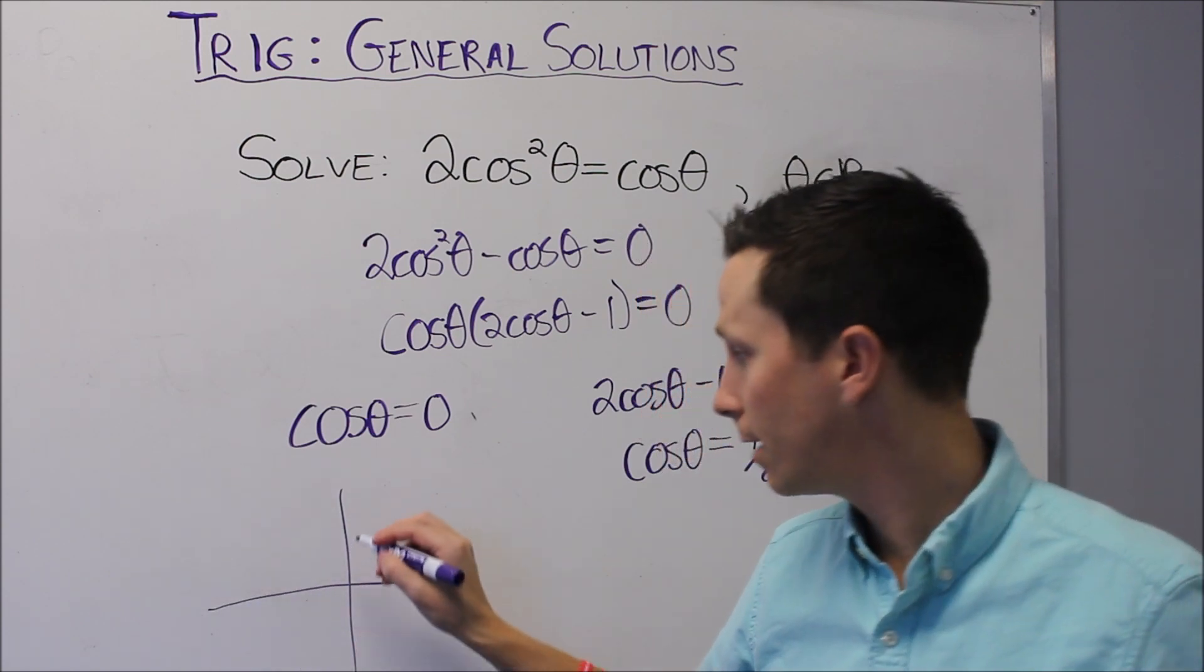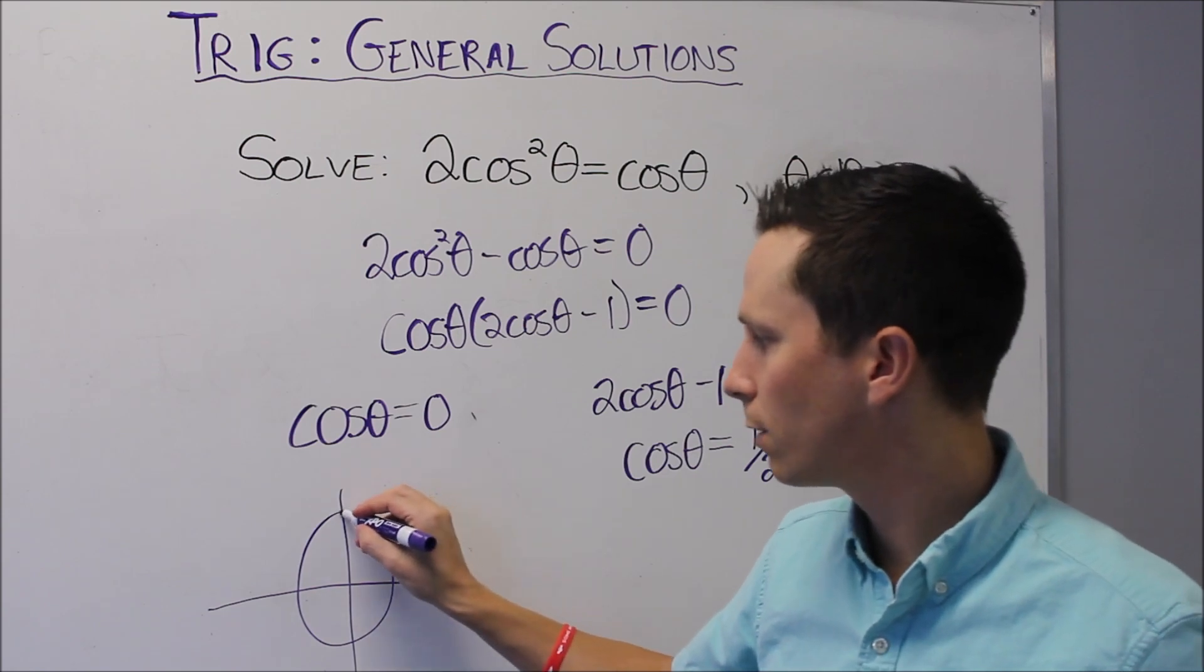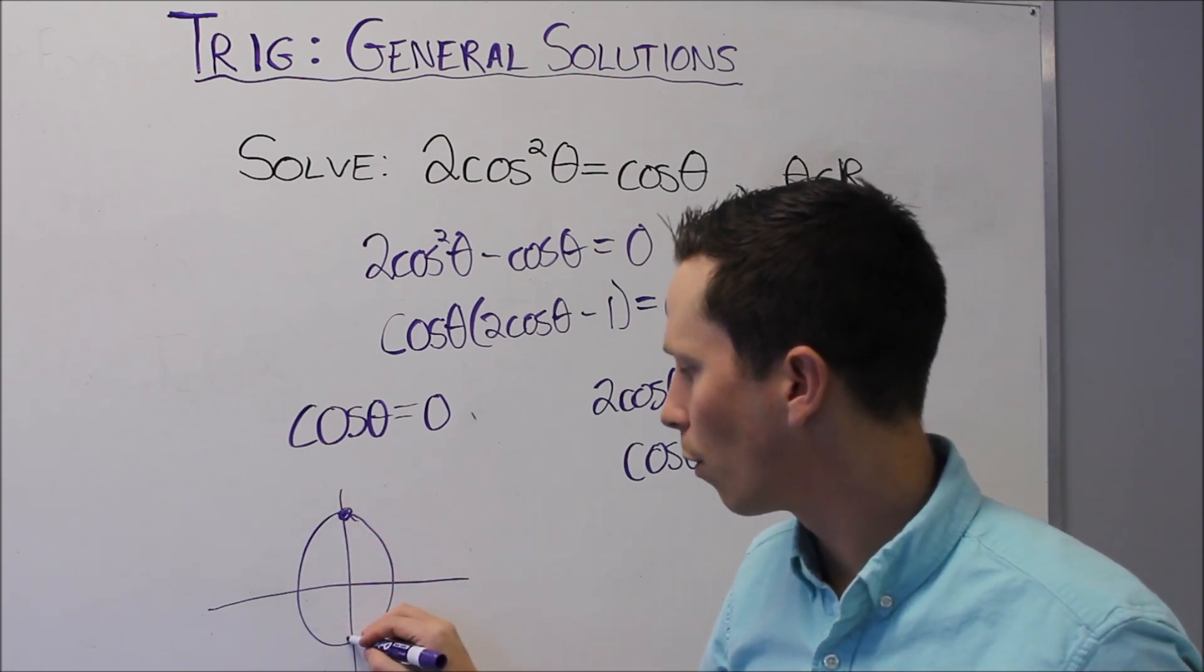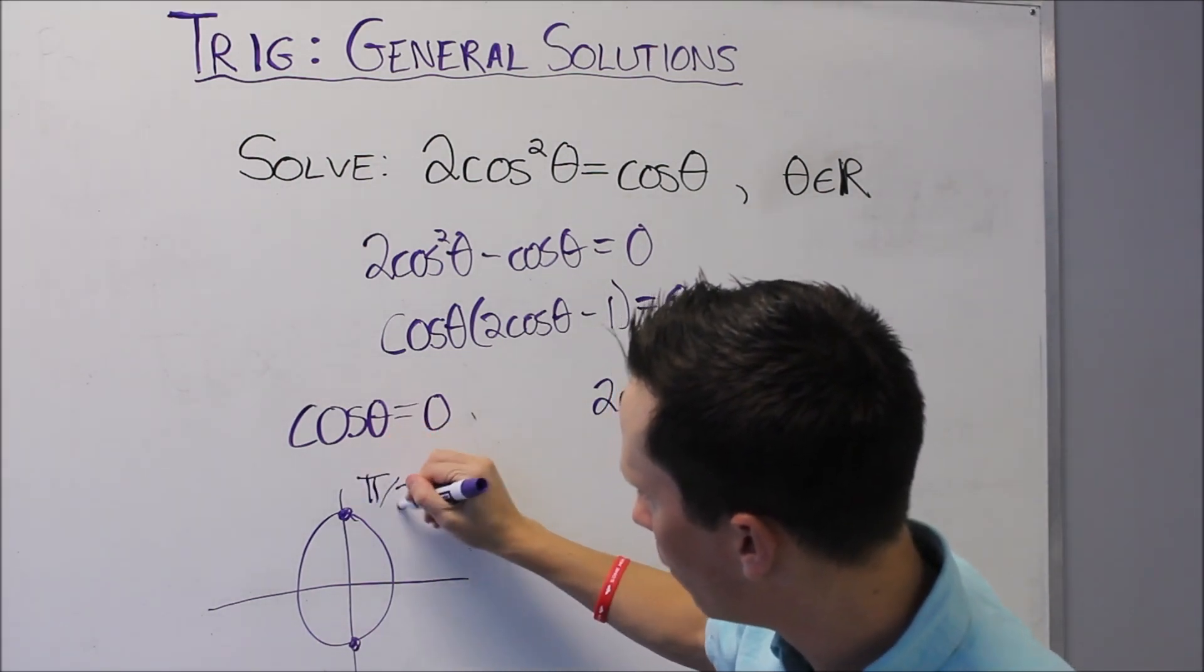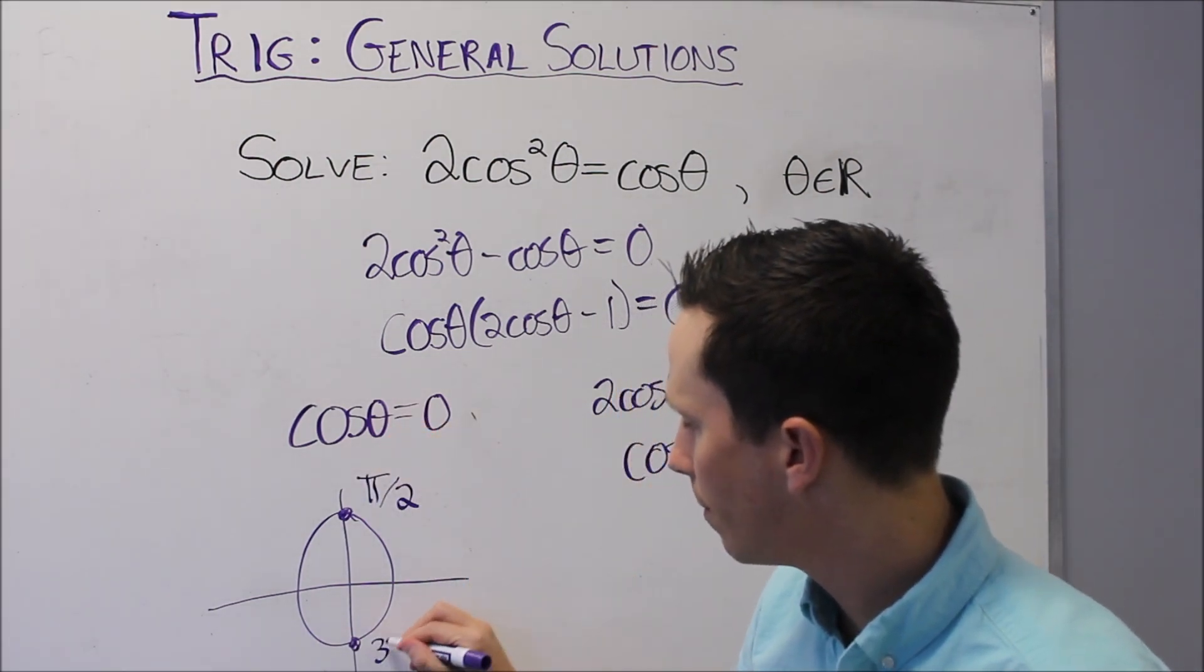Well, if we look at the unit circle really quick, we know that cos theta, here's the unit circle, we know that cos theta equals 0 when we're on the y-axis. And that happens at π over 2, we're in radians here, and 3π over 2.